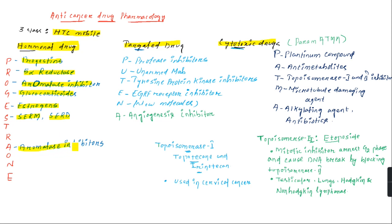Next, targeted drugs. To remember targeted drugs, use the mnemonic protein attack: P for protease inhibitors, U for unarmed monoclonal antibodies, T for tyrosine protein kinase inhibitors, E for EGFR receptor inhibitors, N for newer molecules, A for angiogenesis inhibitors. I will discuss examples of each class after the complete classification.